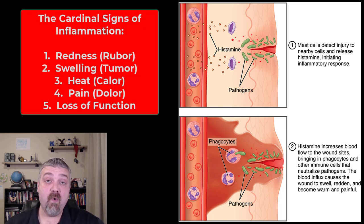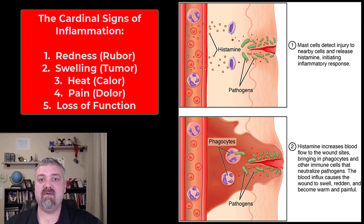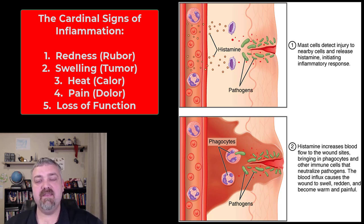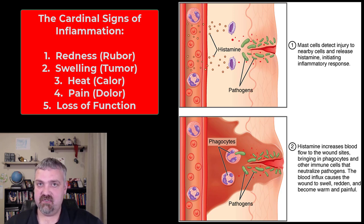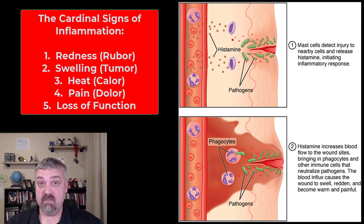First, let's talk about the four cardinal signs of inflammation: redness, swelling, heat, and pain. You have to know them in Latin — rubor, calor, etc. — but don't worry about that. Redness, swelling, heat, and pain. Some would also call the fifth cardinal sign of inflammation a loss of function, which comes with the pain and swelling in the area. Redness, swelling, and heat are all going to be caused by the same thing: an increase in blood flow.